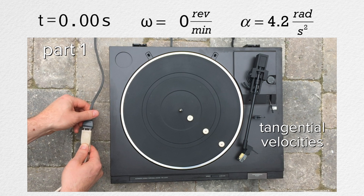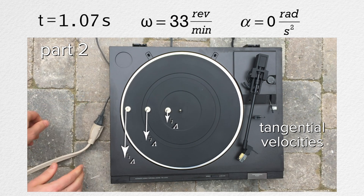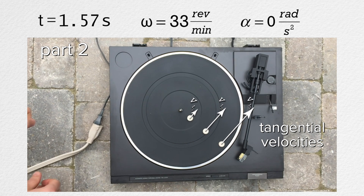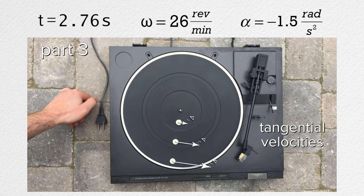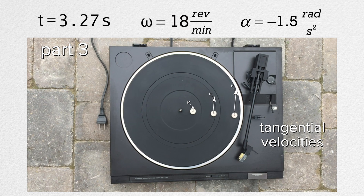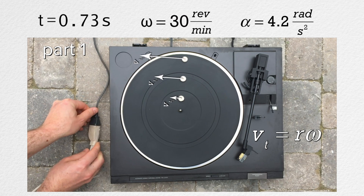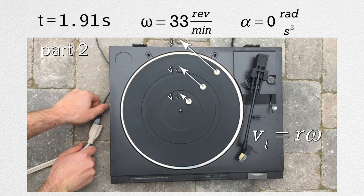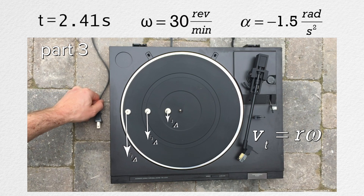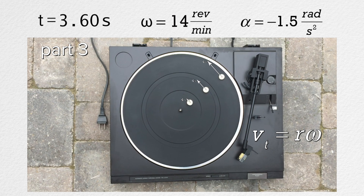During part one, the tangential velocities of the mints look like they are increasing in magnitude. During part two, the tangential velocities of the mints are constant in magnitude. And during part three, the tangential velocities of the mints seem to be decreasing in magnitude. This must be because the tangential velocity equals radius times angular velocity. In part one, the angular velocity is increasing. During part two, the angular velocity is constant. And during part three, the angular velocity is decreasing. And the tangential velocities are directly proportional to the radii — the mints which have a larger path radius have a larger tangential velocity.